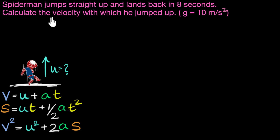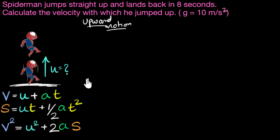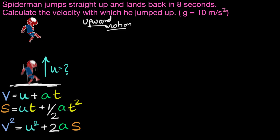We have to consider the upward motion or the downward motion separately — only then can we apply the equations of motion. The first question is: which motion should we consider? Since we are asked to calculate the velocity with which he jumped up, it makes sense to consider only the upward motion — Spider-Man jumping up to the topmost point where he comes to rest.